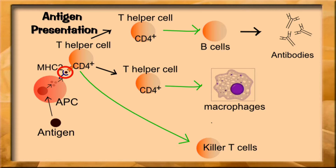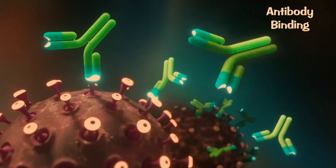Antibodies are proteins that label things for destruction. They'll attach to whatever shouldn't be there — whether a bacteria, virus, or cancer cell — and label them for destruction. Antibodies also interfere with viral replication, making them a very important part of your immune system. When you have antibodies, you're immune.